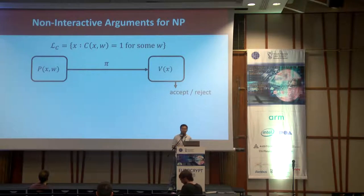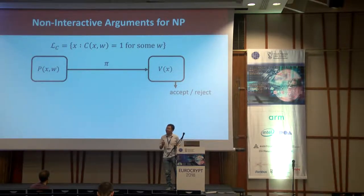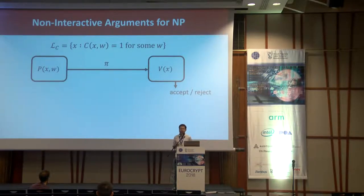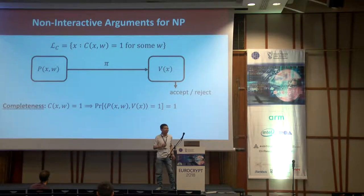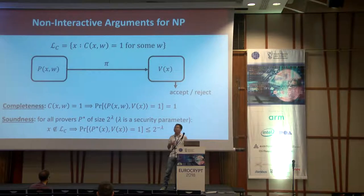I'm going to remind you what an argument system is. An argument system is effectively a two-party protocol between a prover and a verifier, where the prover's objective is to convince the verifier that some NP statement X is true. For this talk, we're going to consider the NP language of Boolean circuit satisfiability. In a non-interactive argument system, the proof is a single message from the prover to the verifier. There are two main properties that we consider: completeness says that an honest prover should be able to convince an honest verifier that the statement is true.